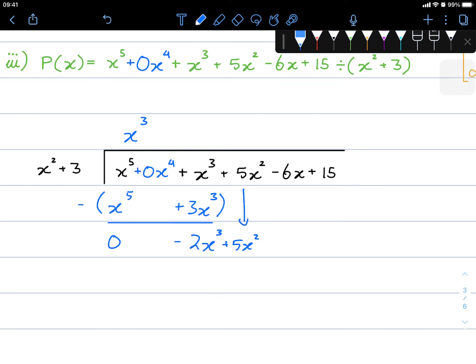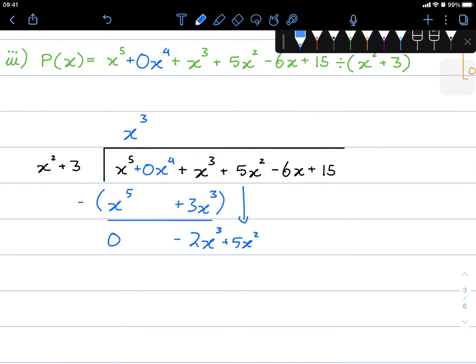And we do our long division. We divide this. Negative 2x cubed divided by x squared is going to be negative 2x.